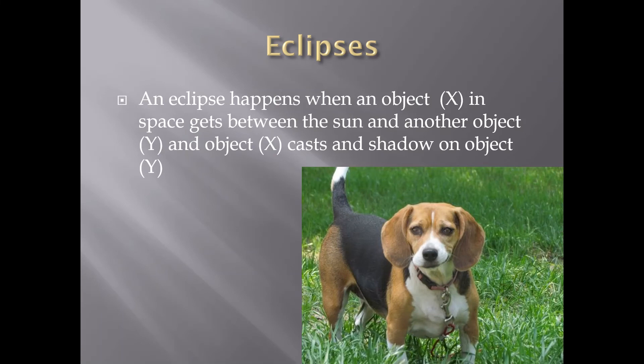An eclipse happens when an object X in space gets between the sun and another object Y. Object X casts a shadow on object Y.